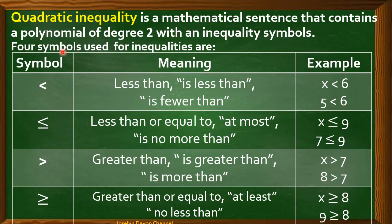The four symbols used for inequalities are the following. First, the less than symbol, meaning fewer than. For example, x less than 6 — we have 5 is less than 6.